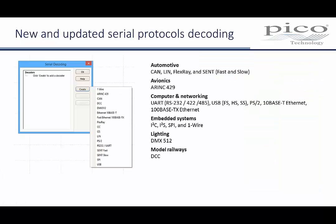Serial communications are widely used in today's electronic devices. PicoScope has included decoders for popular standards such as CAN, LIN, SPI, I2C and RS-232 for some time. With this release, we have added 10 and 100BASE-T Ethernet, DMX512 lighting system control, and DCC or digital command and control protocol for model railways.